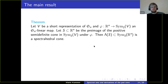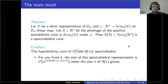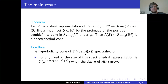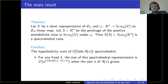Under these conditions, the corresponding spectral set — the set of all symmetric matrices whose eigenvalue vector is in S — is a spectrahedral cone. From this result we can deduce our original result: we take Peter Brändén's representation of the hyperbolicity cones of elementary symmetric polynomials and show they come from such a short representation, then apply the theorem.